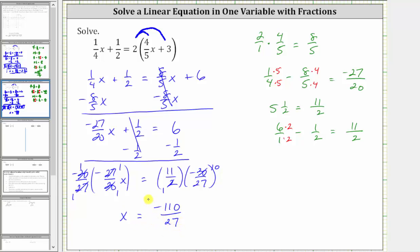Let's also write this as a mixed number. To convert to a mixed number, we will ignore the sign for a moment and divide 110 by 27. There are four 27s in 110. Four times 27 is 108. We subtract, the difference is two. The quotient is four and 2/27, which means as a mixed number, we can express the solution as negative four and 2/27. I hope you found this helpful.